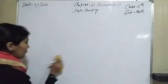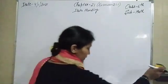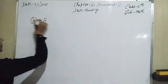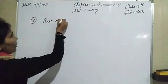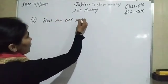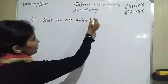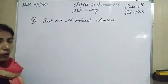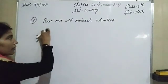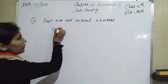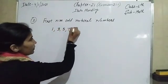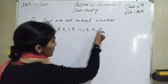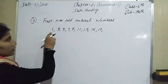The third question: find the mean of the first nine odd natural numbers. So we have to calculate the mean of the first nine odd natural numbers. The odd natural numbers are: 1, 3, 5, 7, 9, 11, 13, 15, 17.